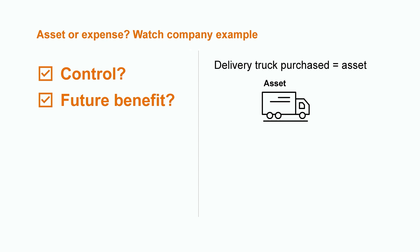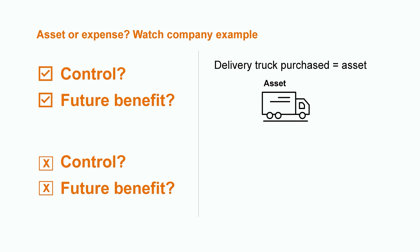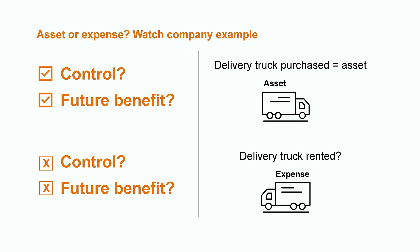What if the company decided to rent the vehicle instead of purchasing it? Since they no longer have ownership, they're not in full control of its use — the rental company could cancel the agreement or sell the vehicle without consent. As a result, the monthly payment would be considered an expense on the income statement instead of an asset. Similarly, renting a building results in a monthly rental expense, not an asset, since the company doesn't have legal ownership.